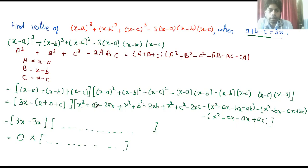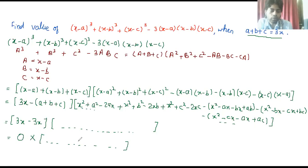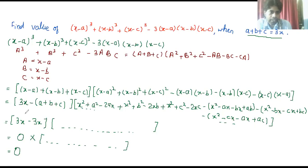So the first bracket becomes 3x minus 3x, which equals zero. Zero multiplied by any expression equals zero. So this is our answer — after solving this expression, we get zero.